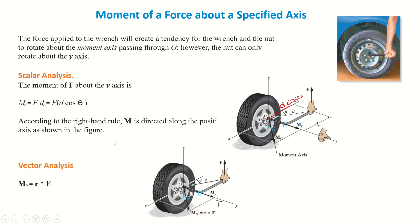Another method to calculate this moment is vector analysis. The same force acts in the upward Z direction, and the distance between the hand and the nut is represented by the R vector. We will take the cross product R cross F, which gives us the moment about point O.